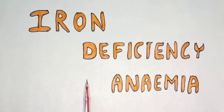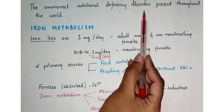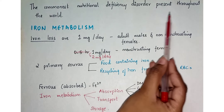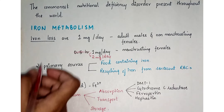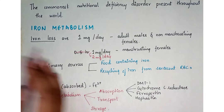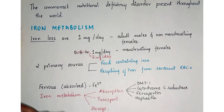Iron Deficiency Anemia is the commonest nutritional deficiency disorder present throughout the world. Whenever they say anemia most commonly, this is what they mean. Before understanding all the different things, we should first know how iron metabolism takes place.